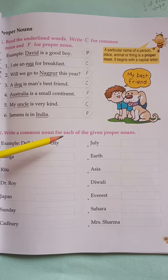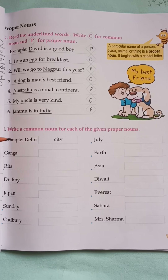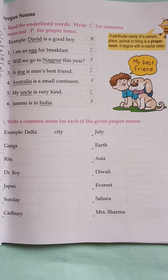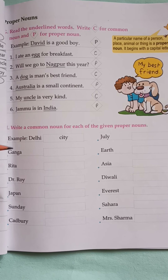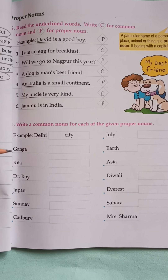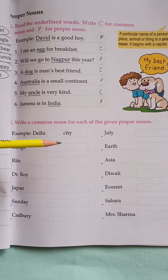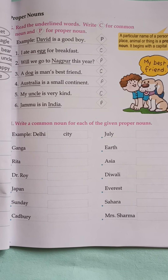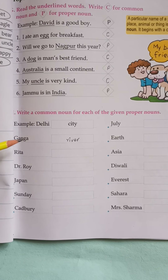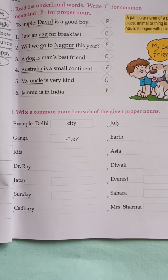Write a common noun for each of the given proper nouns. Here we have common nouns. For example, Delhi is a proper noun, then city is a common noun. Delhi is a proper noun and city is a common noun. This country's common noun is also a common noun.